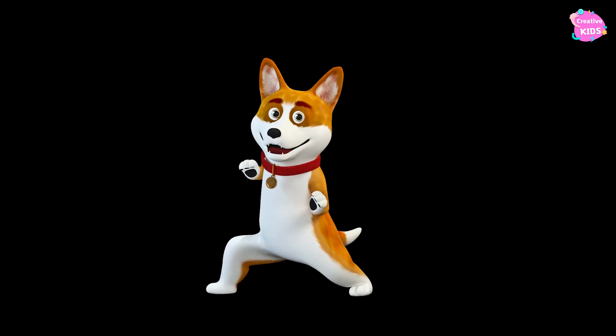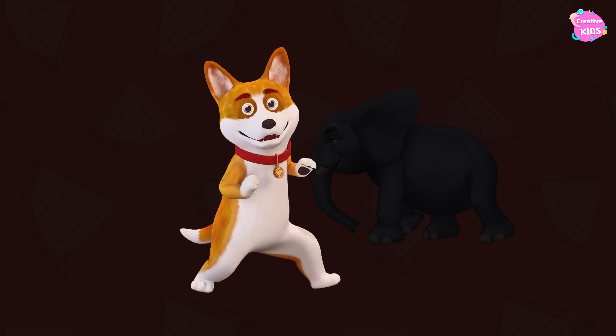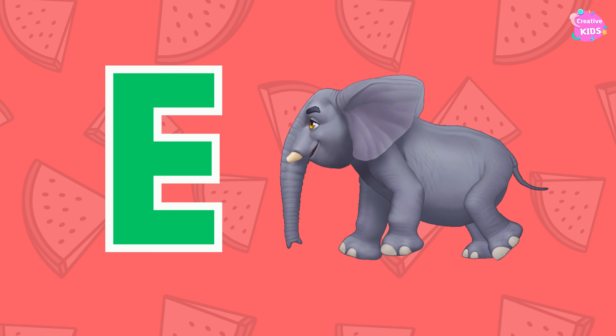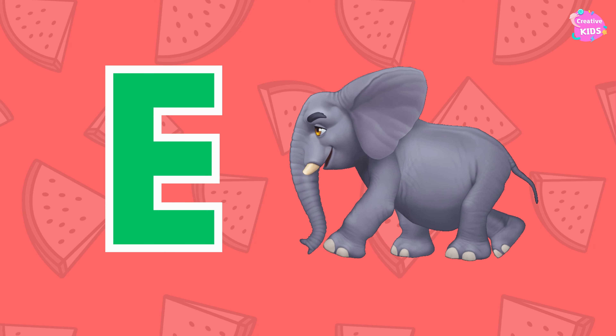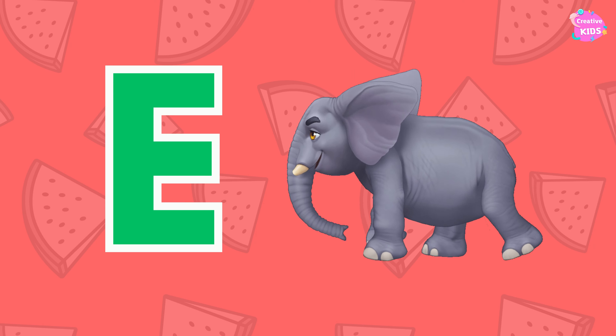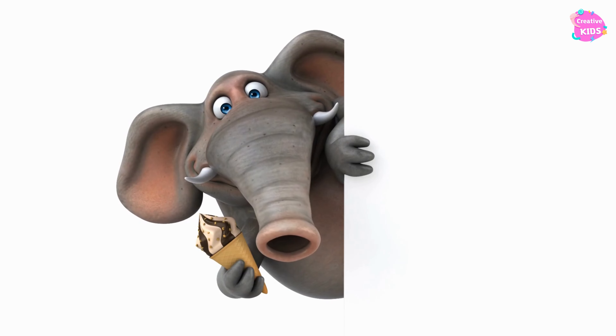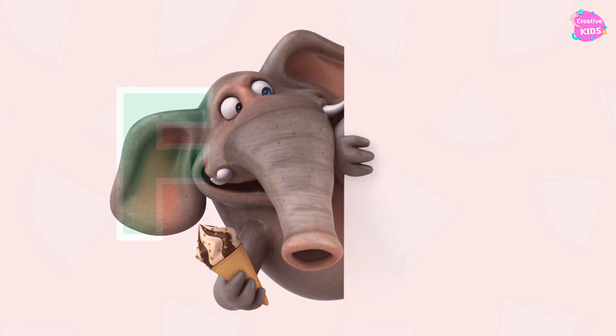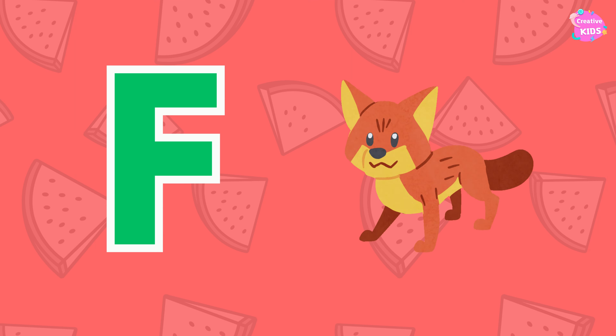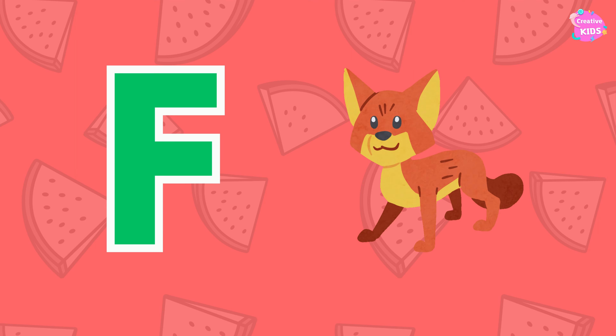D is for dog. E is for elephant. E, elephant. E is for elephant. F is for fox.